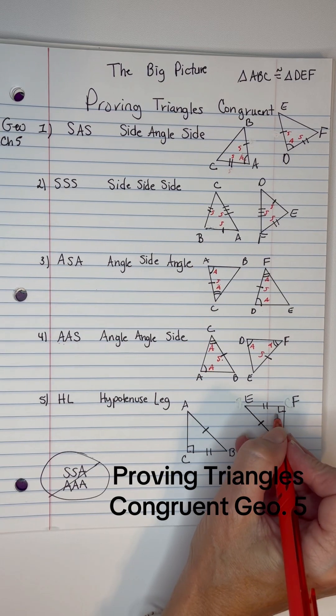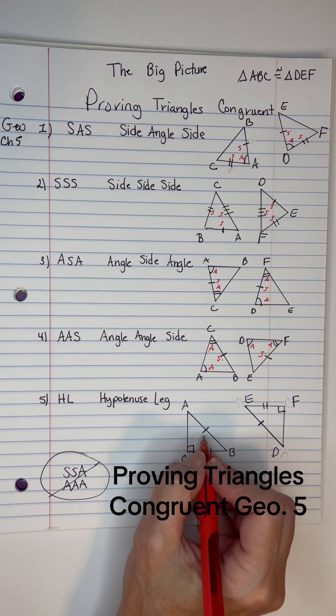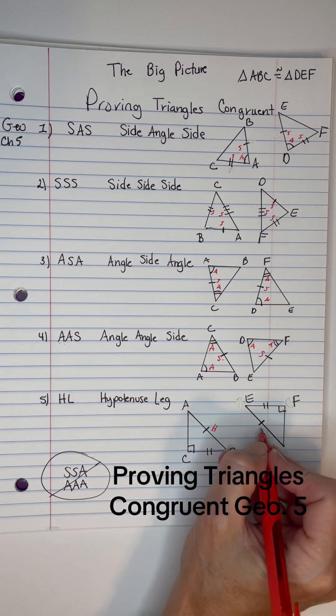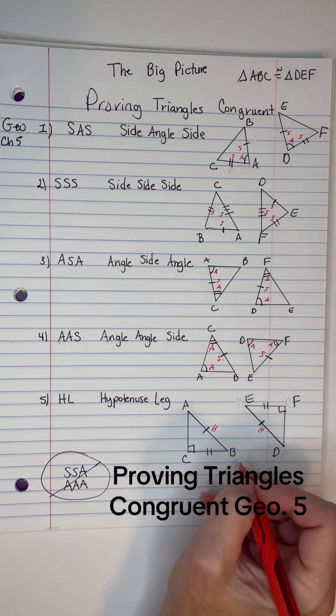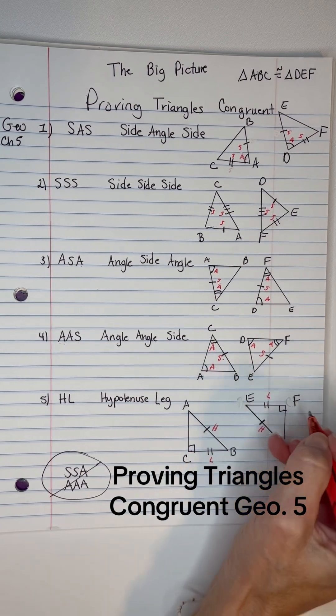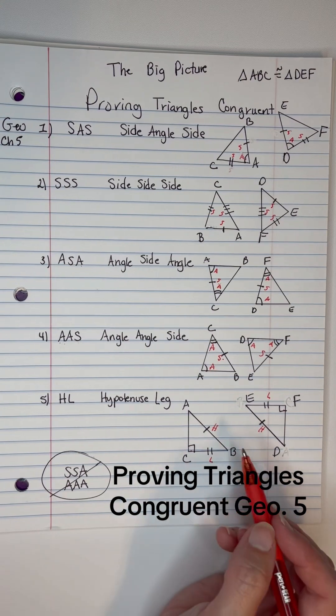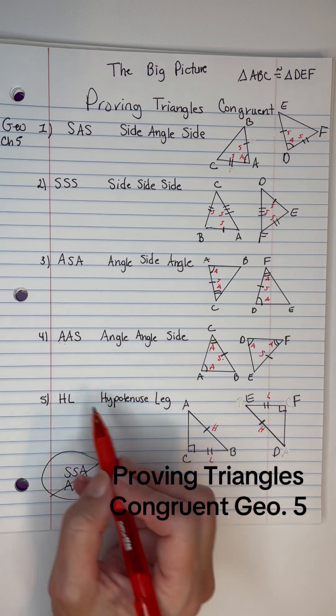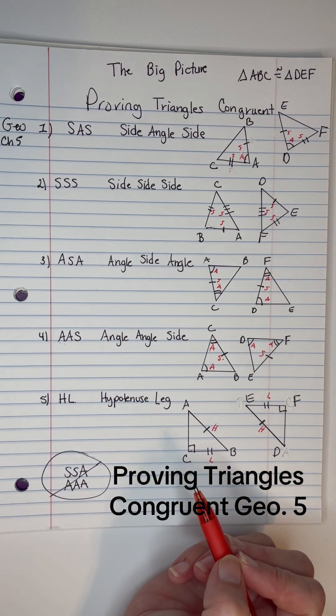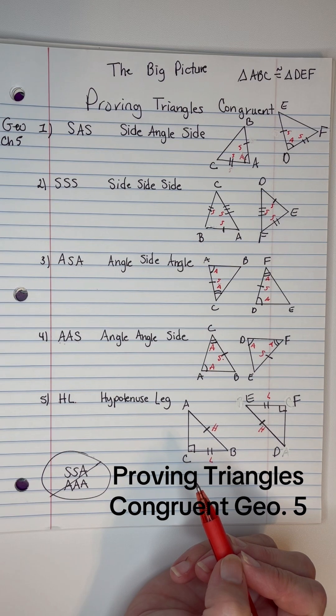the right angle points at the hypotenuse. So, this is a hypotenuse, this is a hypotenuse, and then either one of the legs, and these are legs. So, on this one, if I have a hypotenuse and a leg, I'll use HL for proving congruence.